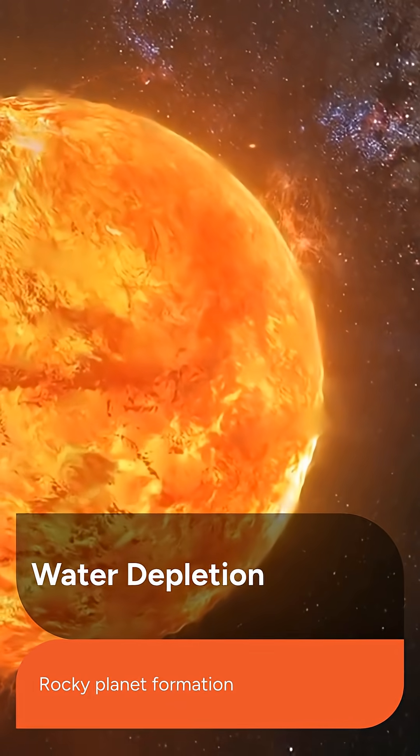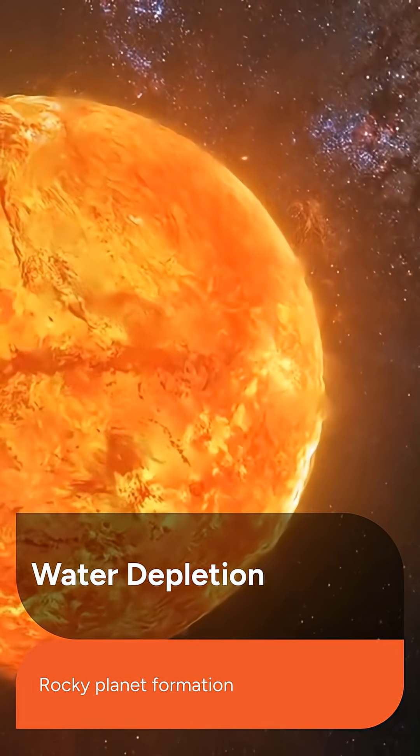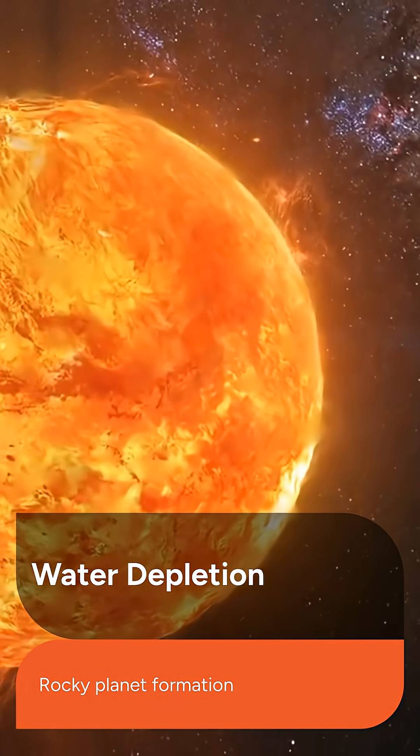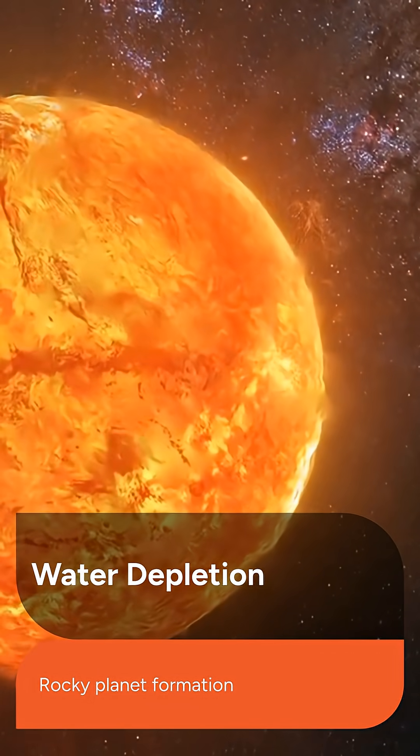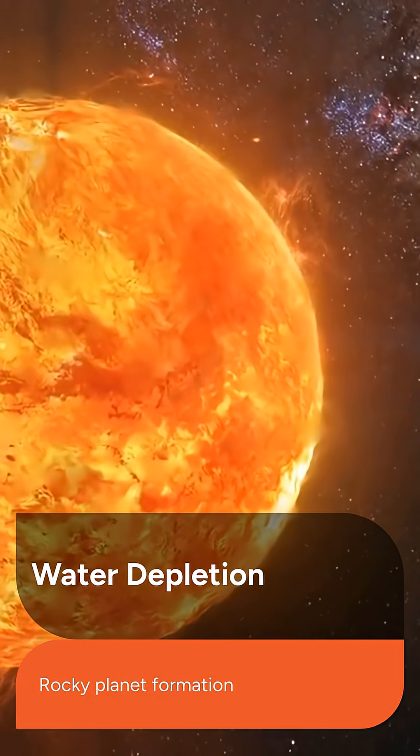The decay of these radioactive elements heated young planetesimals, causing them to lose much of their original water and other volatile materials, a crucial step for forming rocky planets like Earth.